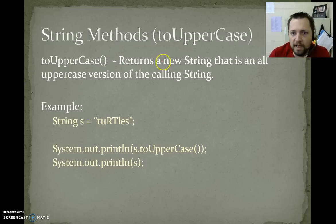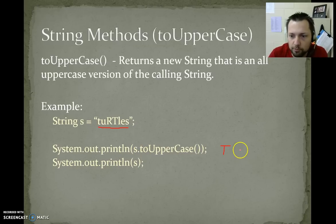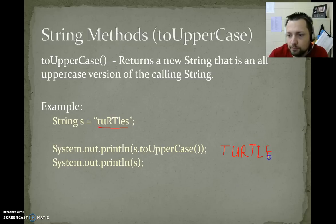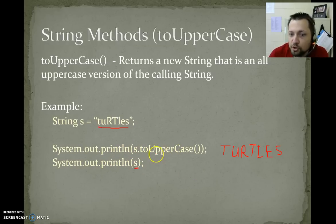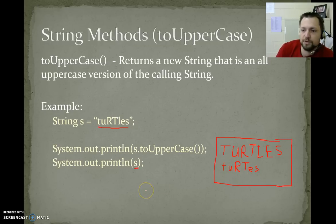toUpperCase — returns a new string that is an all uppercase version of the calling string. So we have "tUrTlEs" — different capitalization. If we do s.toUpperCase(), this would print TURTLES in all uppercase. Then if we print s again, strings are immutable, so when we do things like toUpperCase(), we're getting a new string that has the text TURTLES in all caps. S was not changed, so s is still tUrTlEs. The output of this program is TURTLES in all caps, then tUrTlEs as originally written.